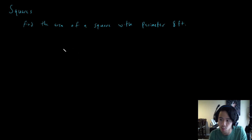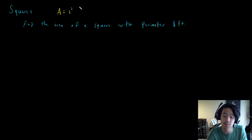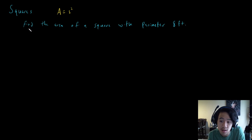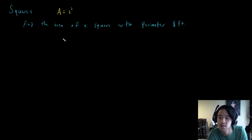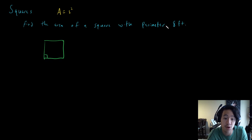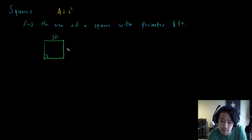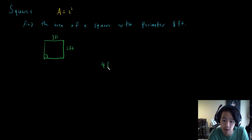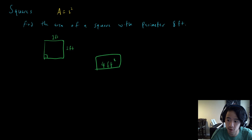Let's say we got a square. The area of a square is equal to the side length s squared. So we need to find the side. Let's draw this — we have a square with perimeter 8 feet. A square has all four sides the same, so that means each side is 2 feet. Therefore the area is going to be 4 feet squared. Simple enough.